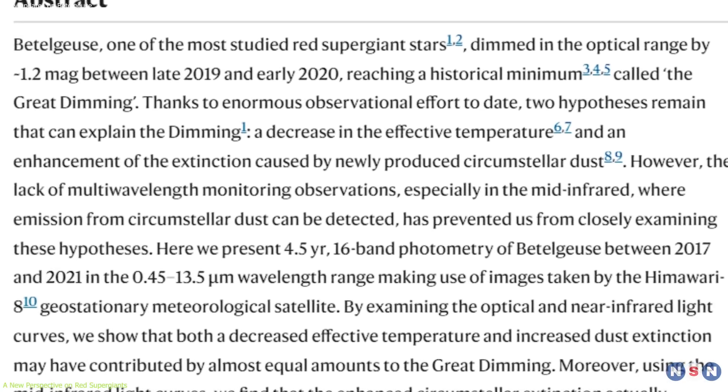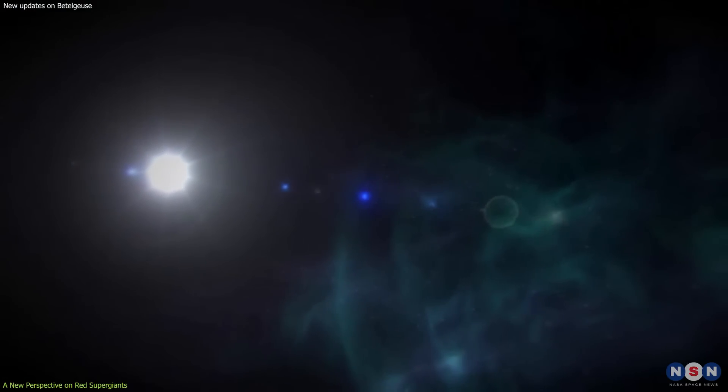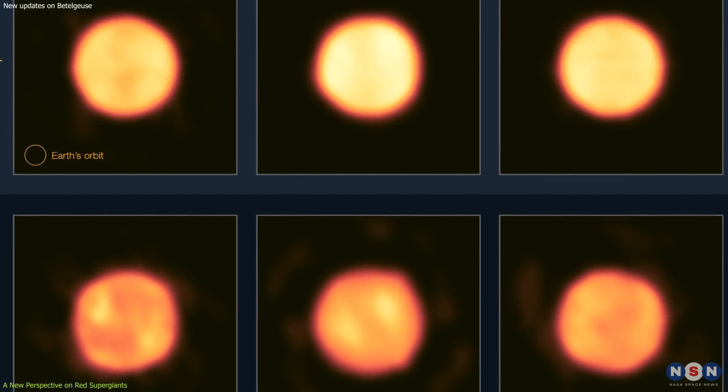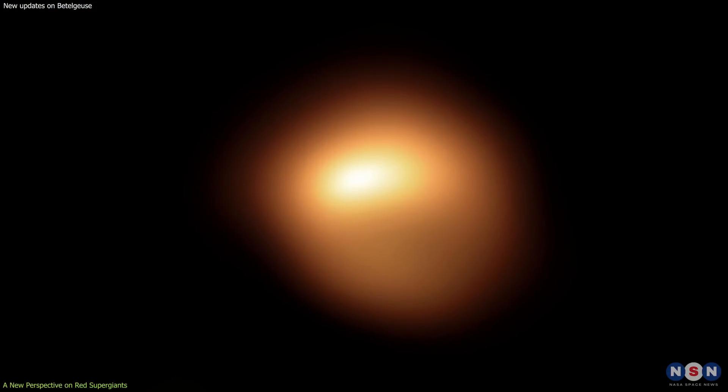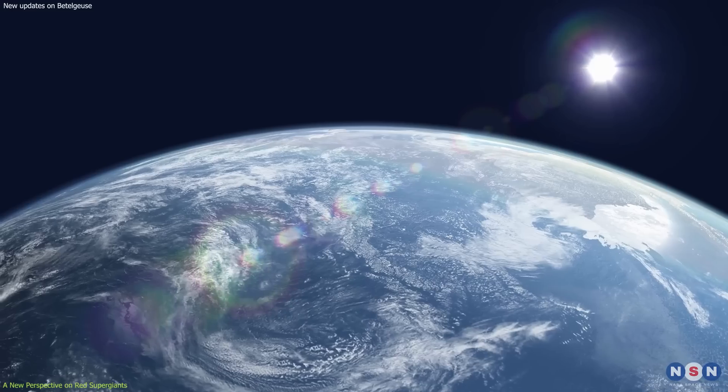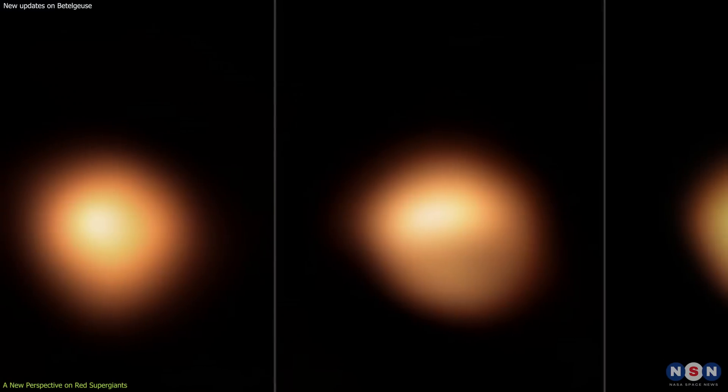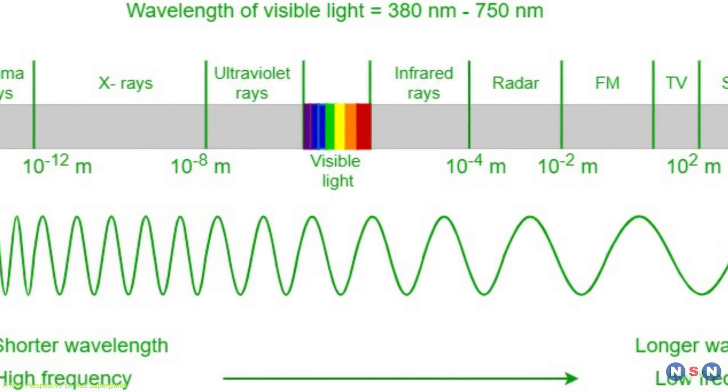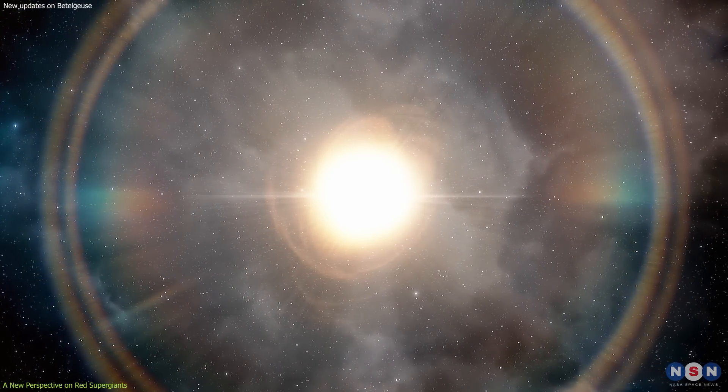Secondly, the study demonstrates the power and potential of modern telescopes and instruments to capture unprecedented details of stellar phenomena. The images from SPHERE are among the highest resolution images ever taken of Betelgeuse's surface, revealing features as small as 37 million kilometers across. That's equivalent to about 25 times the diameter of Earth. They also show different wavelengths of light, such as visible, infrared, and polarized light, which reveal different aspects of Betelgeuse's atmosphere and dust cloud.